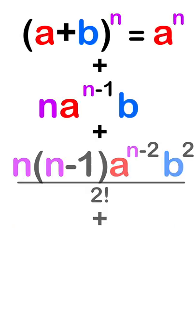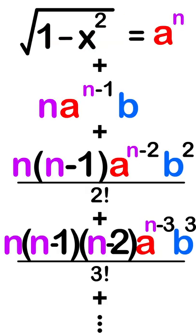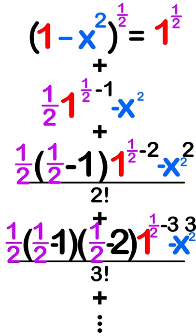This is the binomial expansion formula. Newton was the first to apply the binomial expansion for the equation of a circle.